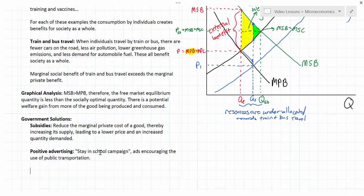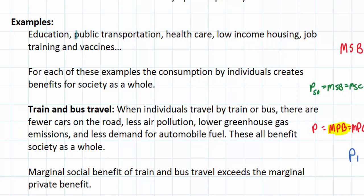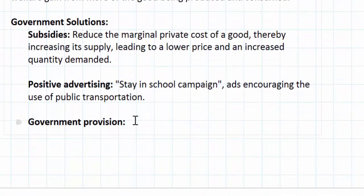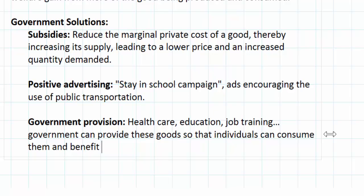A third option is government provision. Looking at our list of examples, healthcare and education are provided by government in many rich-world countries — in some Northern European countries even university education is government-funded. When workers become unemployed, many countries offer government-provided job training, which would be under-provided by the free market but thanks to government provision is available at a level that benefits society as a whole.